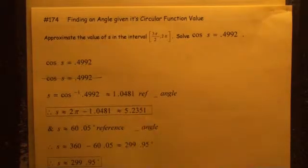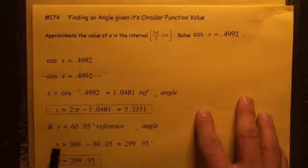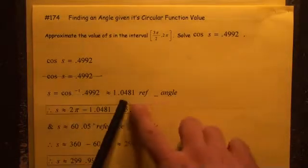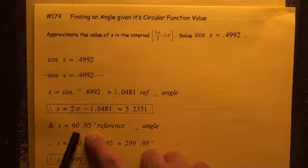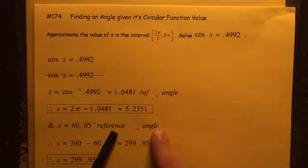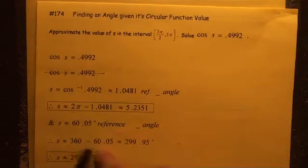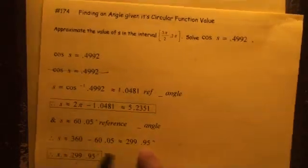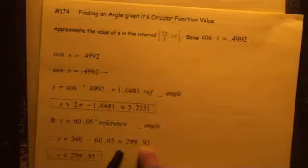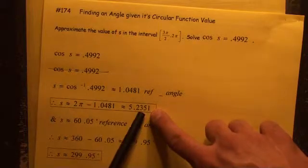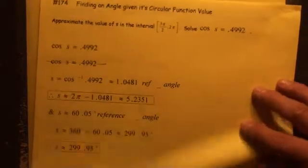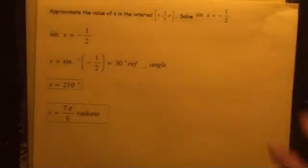Another way to do this would be in degrees. If you convert the reference angle to degrees, you get 60.05 degrees. Subtract from 360 and you get 299.95 degrees. These two values are the same — if they want radians, it's 5.2351; if they want degrees, it's 299.95.